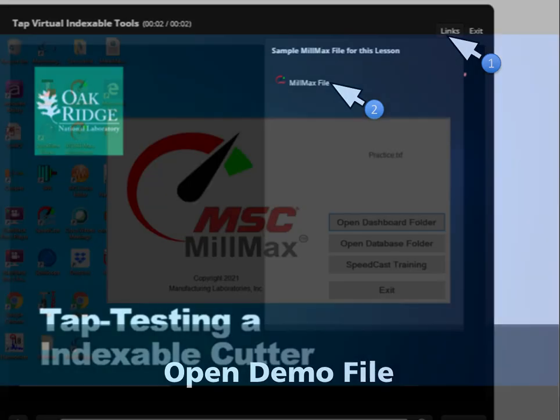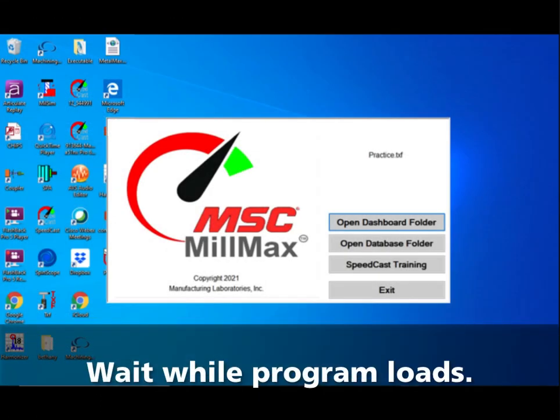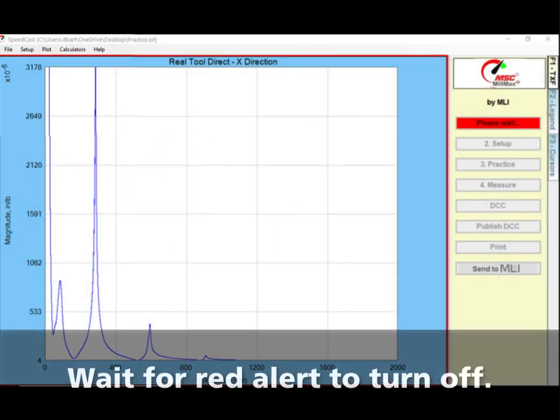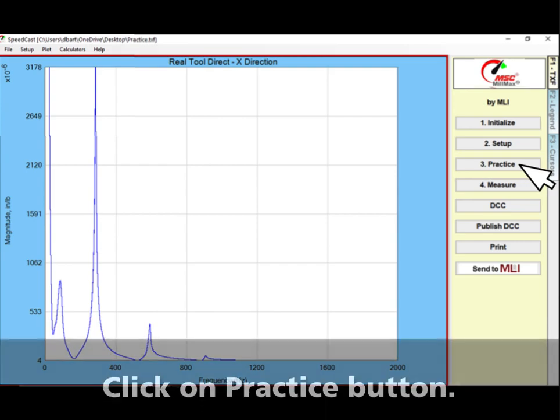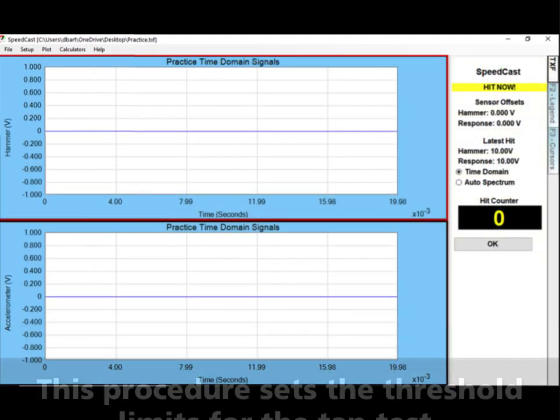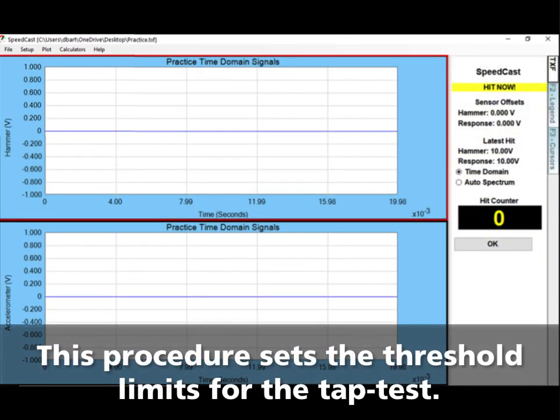Wait while the program loads. Wait for Mill Max to initialize and the red alert to go off. Click on the practice button. This procedure sets the threshold limits for the tap test.